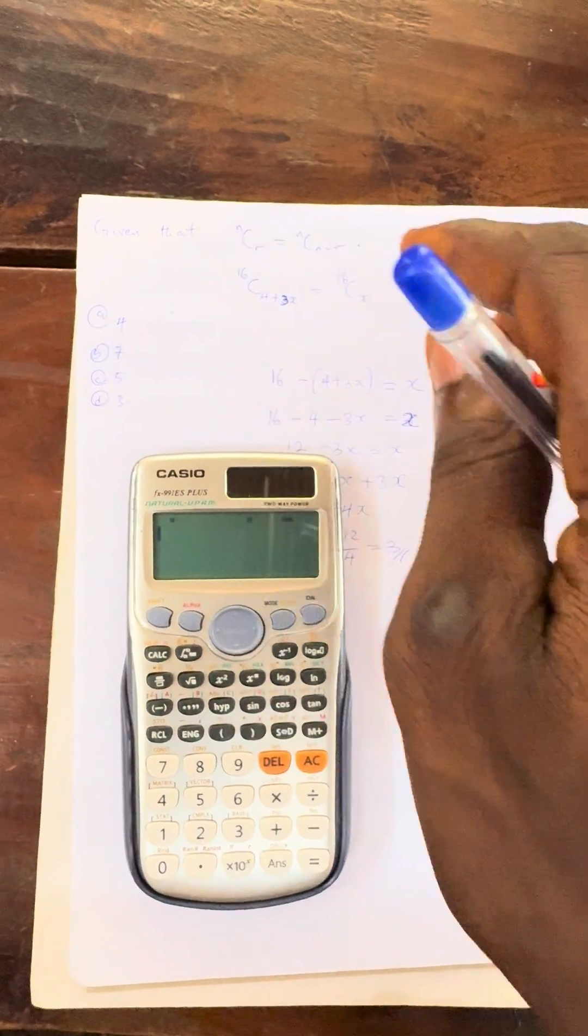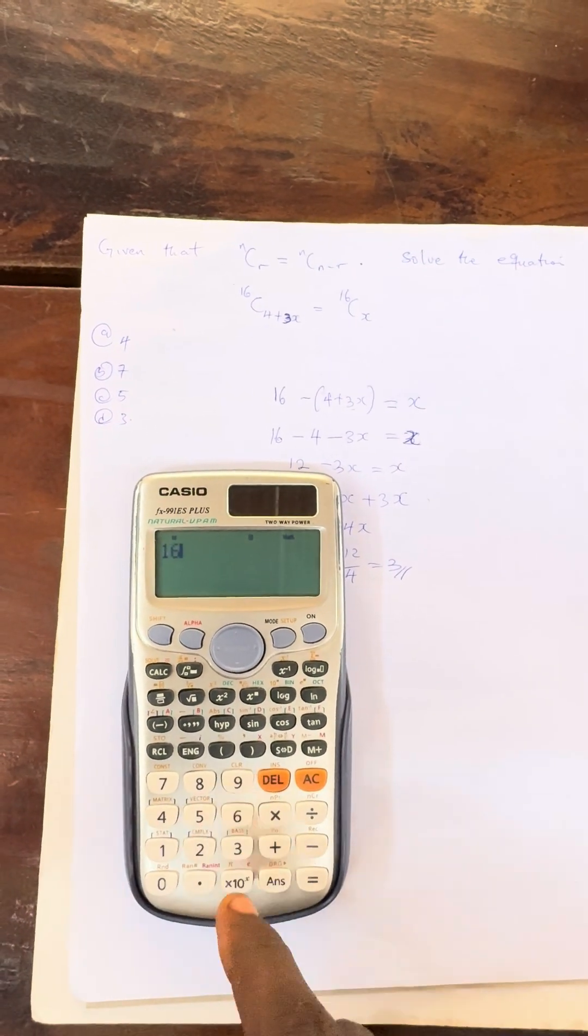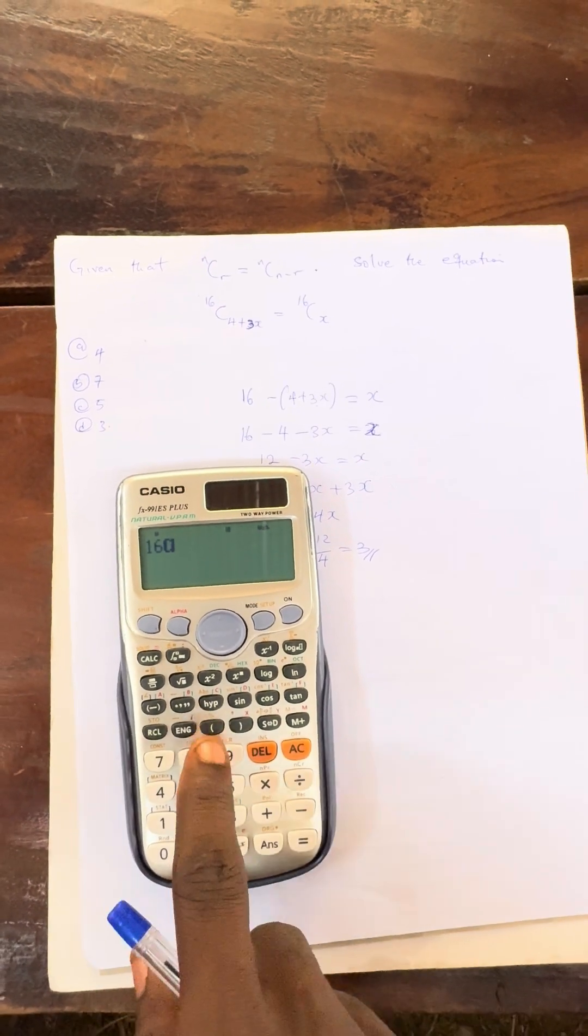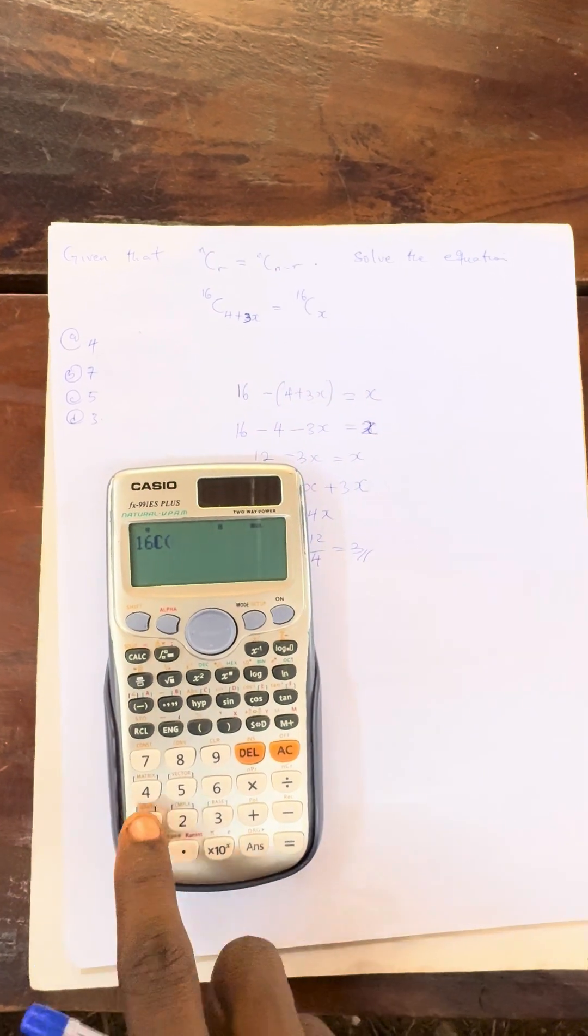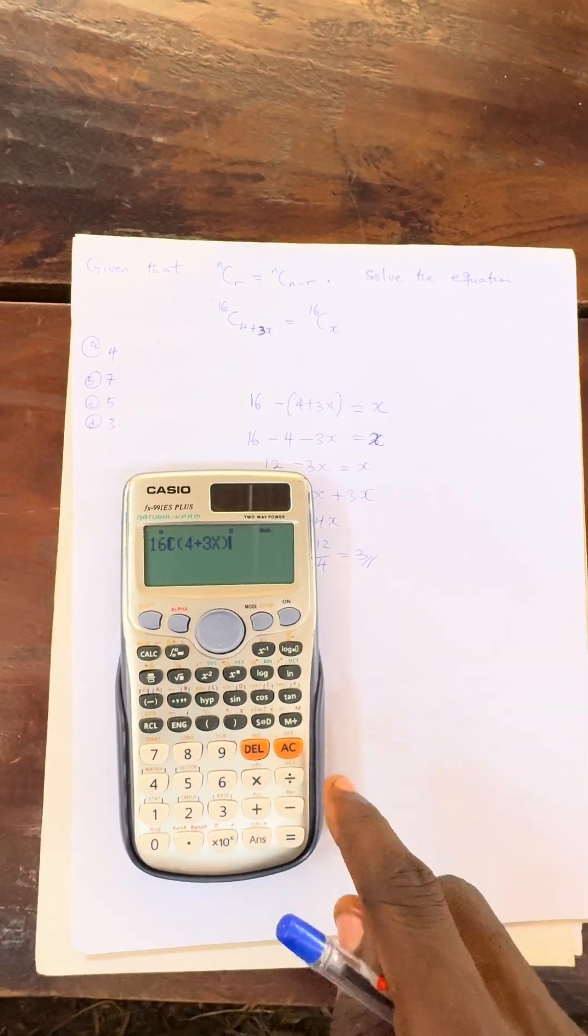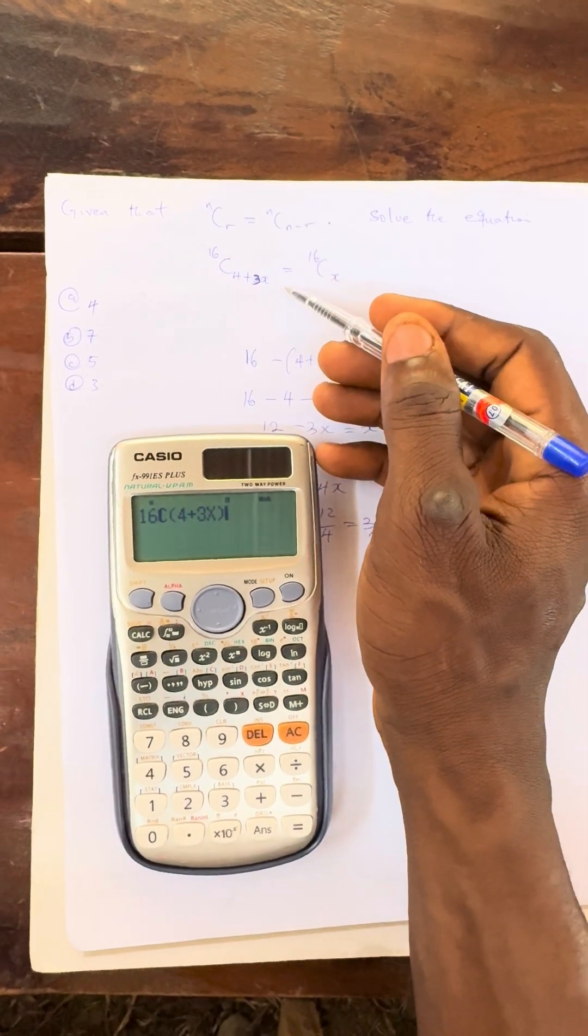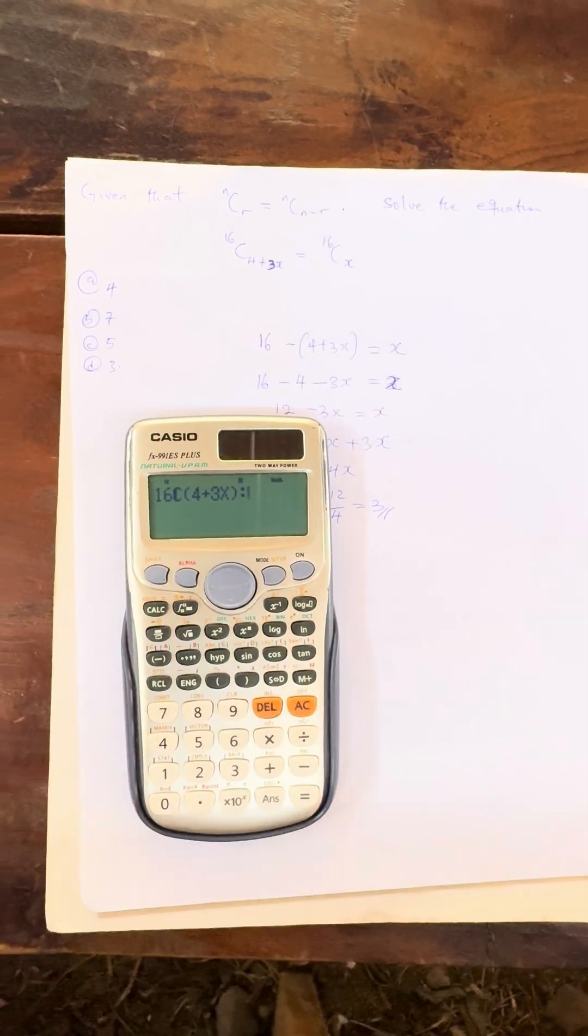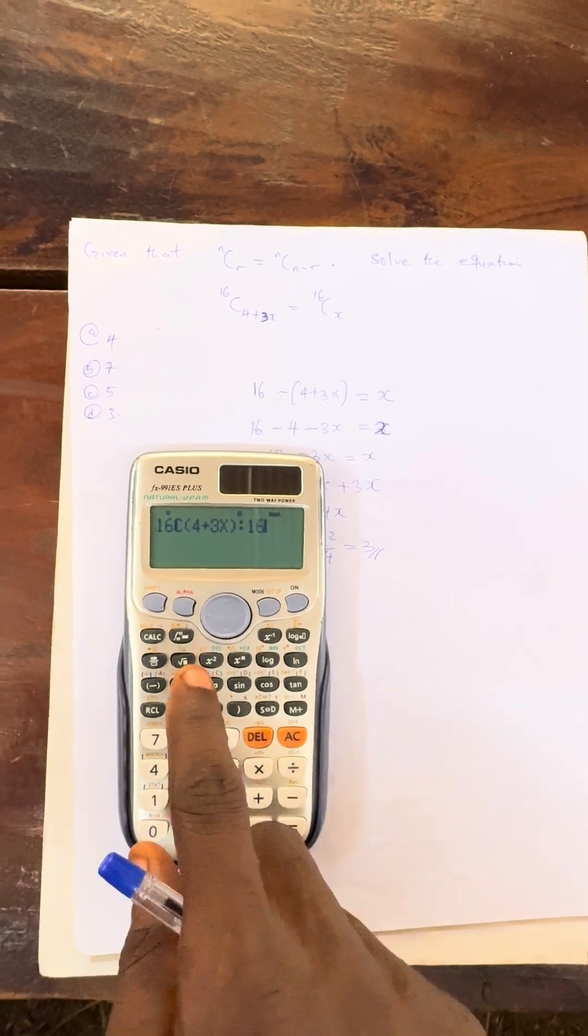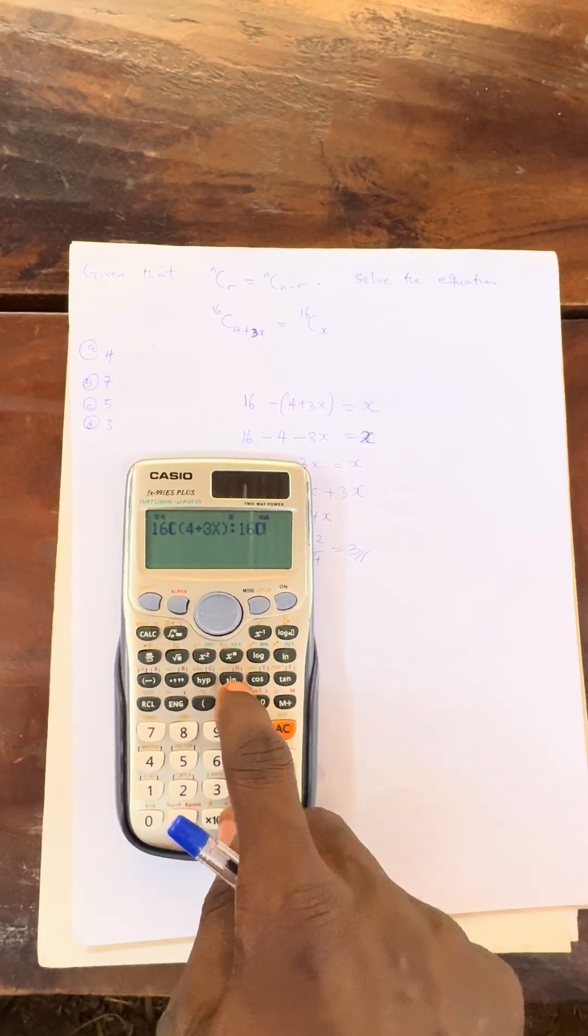Let us see. Now I will press the first one, which means I will press 16, then shift. Combination is there. Then open the bracket. We have 4 plus 3, then alpha x, close the bracket. Then this equals to, I am going to change it to dot here. Then let me press the right side, and the right side is 16, then combination, alpha x.